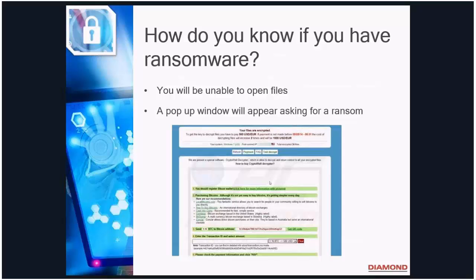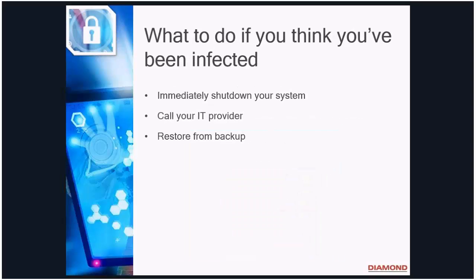So how do you know if you have ransomware? Typically you'll discover you've been infected when you go to open a file on your computer and you can't. At that point a window will pop up saying your files are encrypted and you can't access them until you pay the ransom. You need to immediately shut down your system if you think you've been infected. If your system is connected to a business network, it's absolutely critical that you take it off the network and shut it down as quickly as you can. Call your IT provider and get assistance straight away. In most cases, unfortunately, the only way to get those encrypted files back is to recover them from backup — there really is no other way. It's so important to make sure your backups are working.